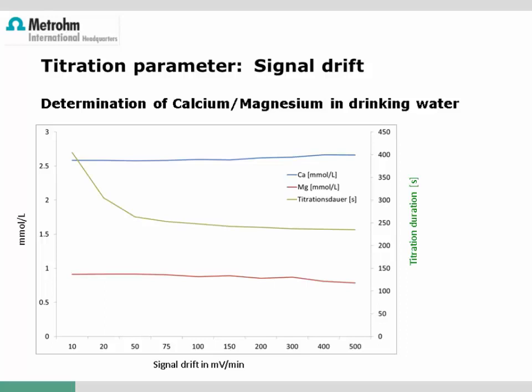A practical graph shows the titration of calcium and magnesium in drinking water using signal drift criteria up to 500 mV/min. Up to 50 mV/min, there is a major impact on titration duration without affecting precision. At higher values, the titration does not get significantly faster but results start becoming less precise.